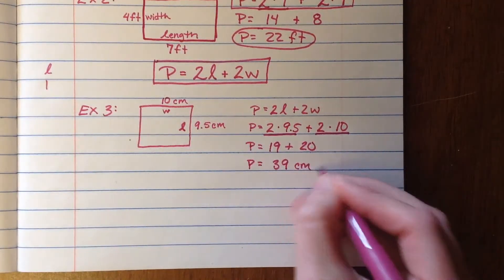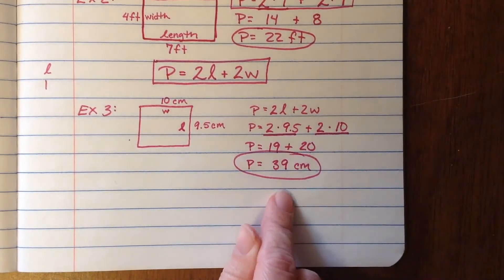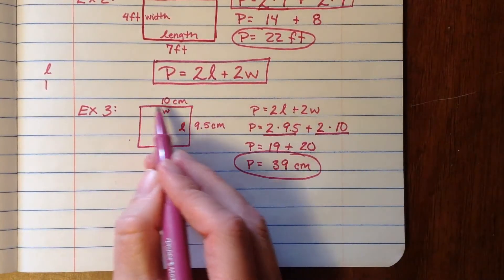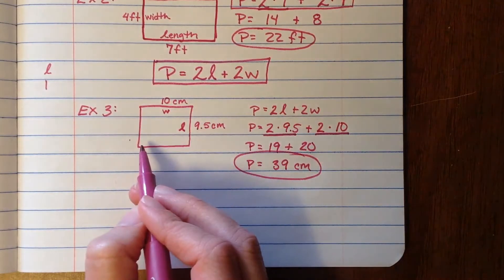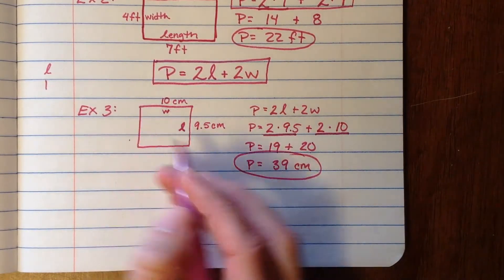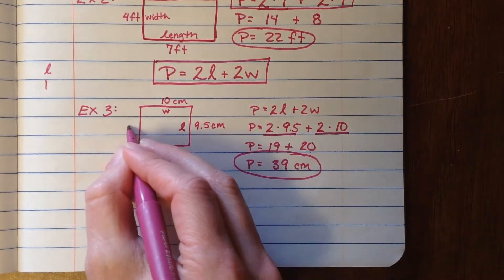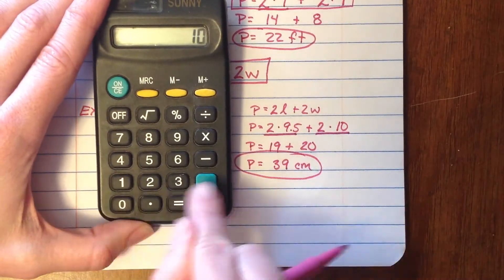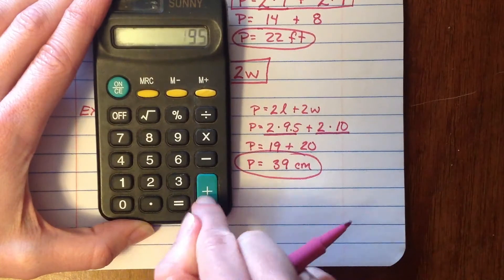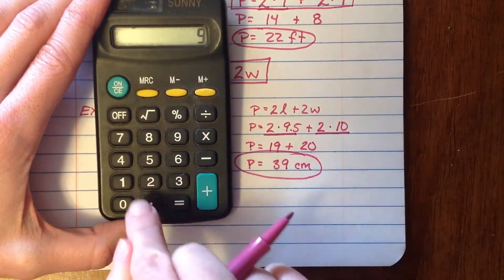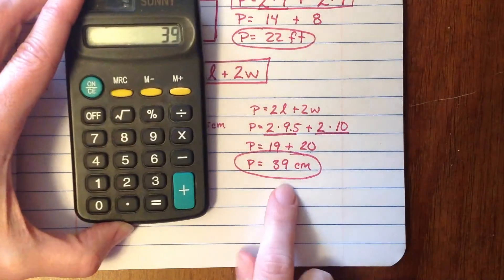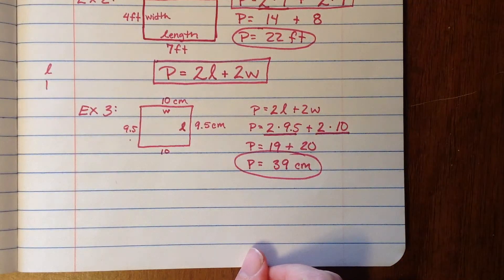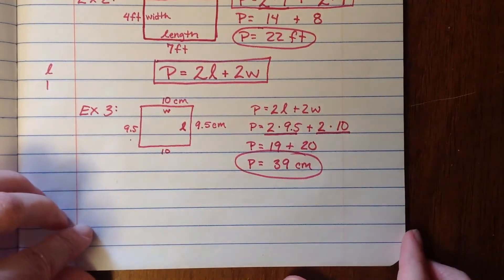Calculating those multiplication problems first — almost like order of operations — two times 9.5 equals 19, plus two times 10 gives me 20. Then I add those together: 19 plus 20 gives me 39. My unit was centimeters, so that's my final answer: 39 centimeters. You can check yourself by doing 10 plus 9.5 plus 10 plus 9.5 — going all the way around — and you do end up getting 39. Both ways work.